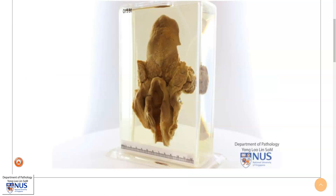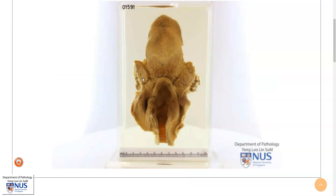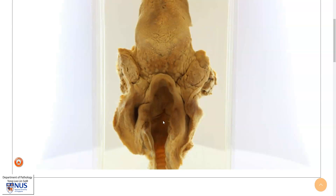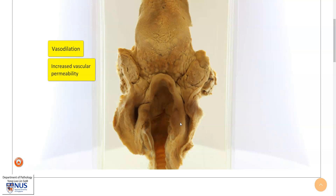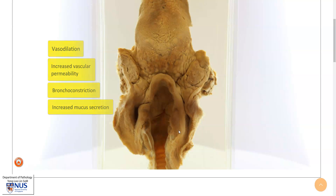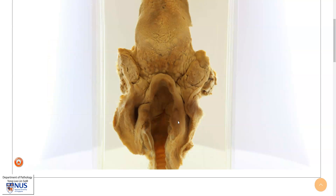In summary, this is an example of pharyngeal structures with the palatine tonsils and laryngeal structures showing marked edema as a result of an allergic reaction, with the key pathological processes being vasodilation, increased vascular permeability, bronchoconstriction, as well as mucus plugging. Without immediate treatment to relieve the airway obstruction, whether using epinephrine or physical means, this can potentially be fatal. Thank you.